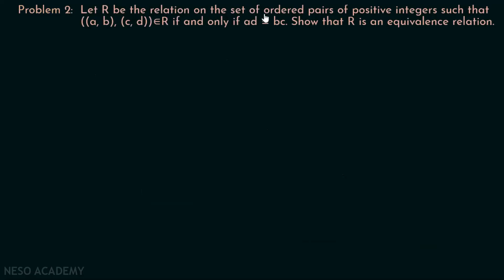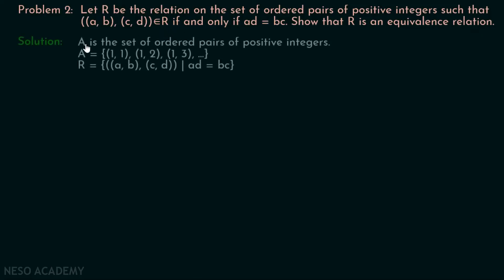Here is problem two. Let R be the relation on the set of ordered pairs of positive integers such that the ordered pair ((A, B), (C, D)) belongs to R if and only if AD equals BC. We have to show that R is an equivalence relation. Let us suppose that set A is the set of all ordered pairs of positive integers. R is defined on this set where A times D equals B times C.